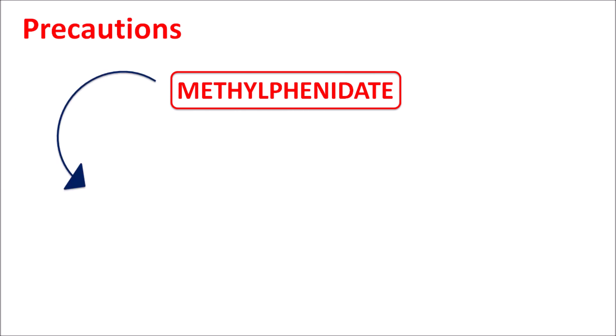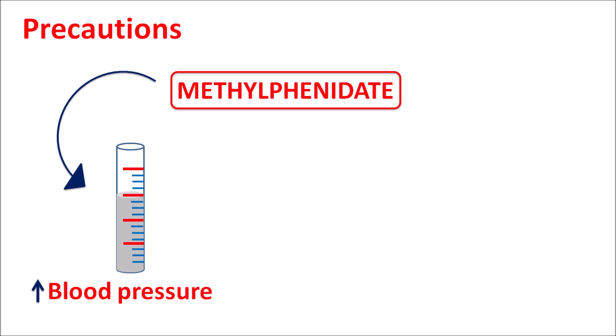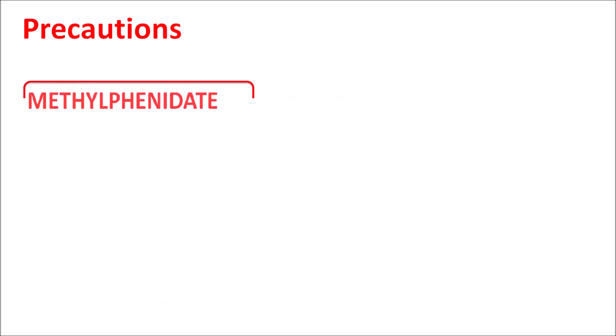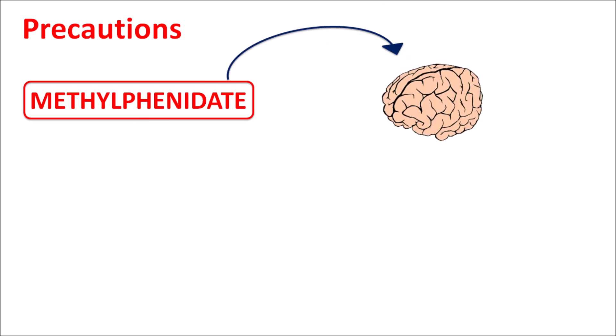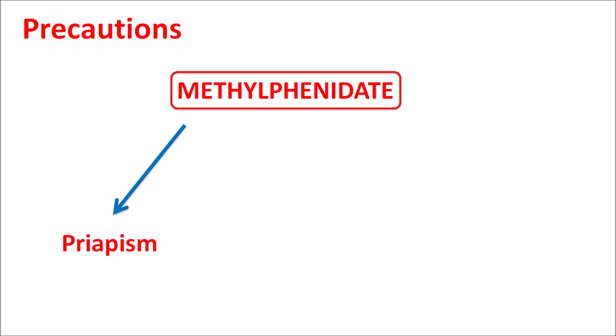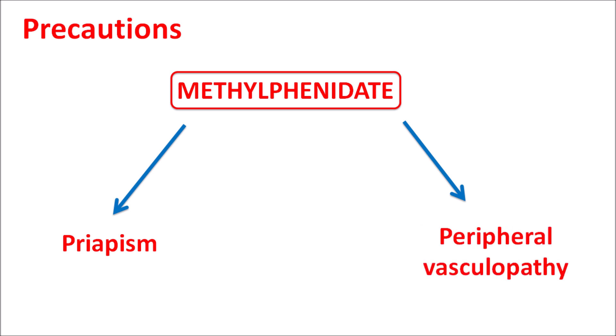This drug can affect blood vessels, increasing blood pressure in patients. It can also act on the heart, increasing the rate of contraction leading to tachycardia and palpitations. Due to elevated dopamine levels in the CNS, it can produce psychotic symptoms including hallucinations, delusions, and even a manic phase. Patients already experiencing psychotic symptoms should use this drug carefully. The drug can also increase the risk of priapism — prolonged erection — and increase peripheral vasculopathy resulting in vasoconstriction and symptoms of Raynaud's disease. In children, long-term administration may suppress growth.